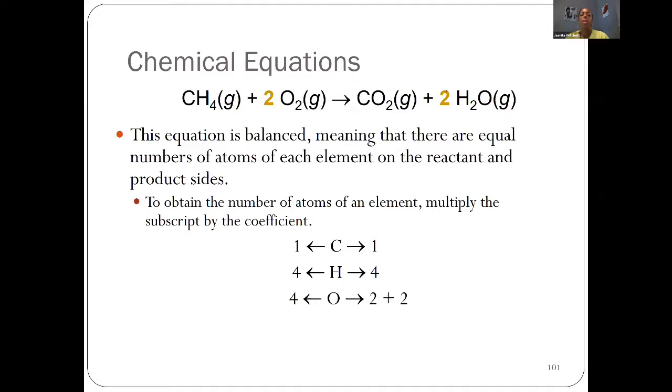Balancing the equations means there are equal numbers of atoms on each side after we're done. To check ourselves, we're simply multiplying the coefficient position by any subscript present in the molecule. For carbon we see one as the coefficient, one as the subscript, so one carbon on the reactant side, four hydrogens, and four oxygens - that four coming from two times two.